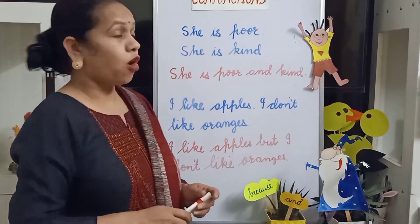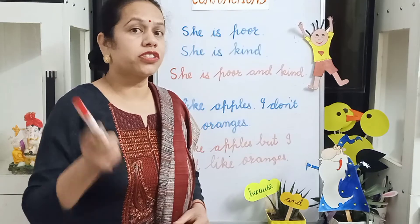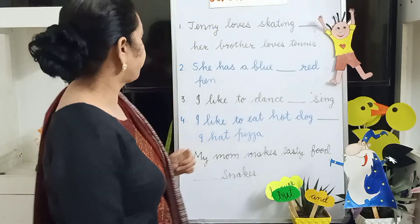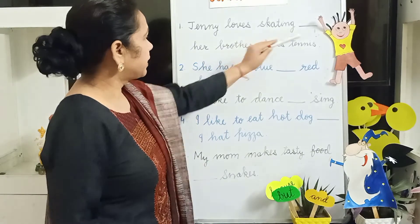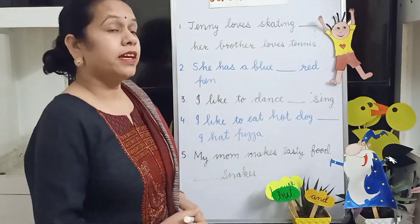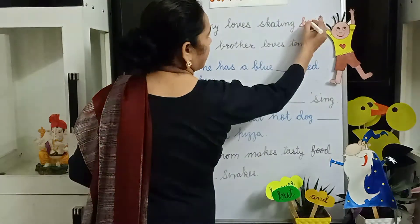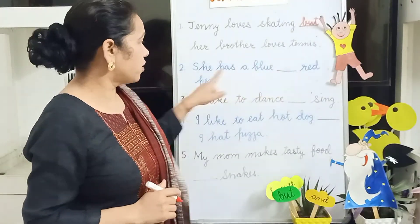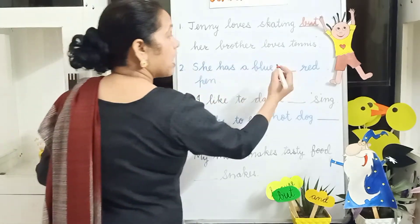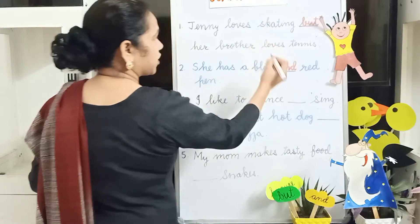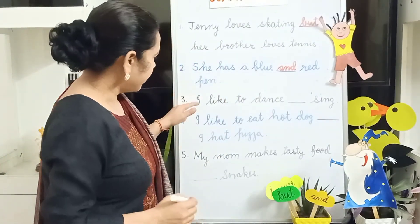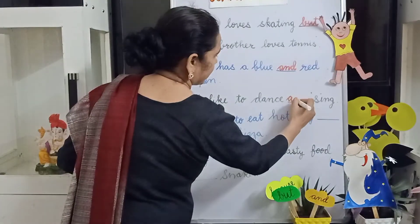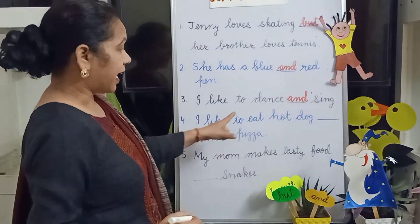Okay, now we will do one exercise by using conjunction 'but' and 'and' together. Fill in the blanks using conjunction 'and' or 'but.' Jenny loves skating — her brother loves tennis. Here we will use conjunction 'but' for opposite ideas. She has a blue and red pen — conjunction 'and.' I like to dance and sing — conjunction 'and.' I like to eat hot dog — I hate pizza. So: I like to eat hot dog but I hate pizza — we will use 'but' here.